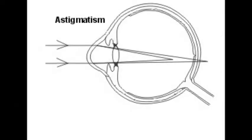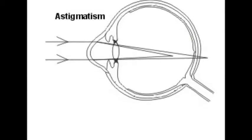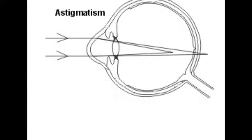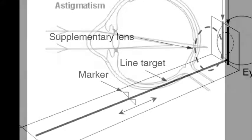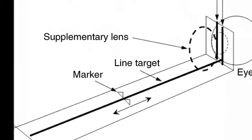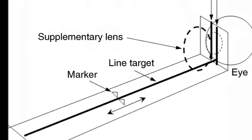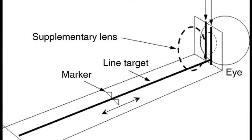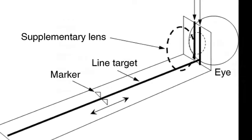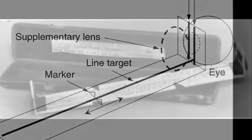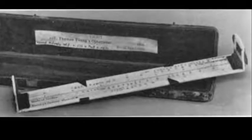In 1801, Thomas Young discovered the root cause of astigmatism by using a modified version of an optometer invented in 1738 by William Porterfield. Unlike the original optometer, which only had vertical slits to view light through, Young's version provided the ability to rotate the slits.